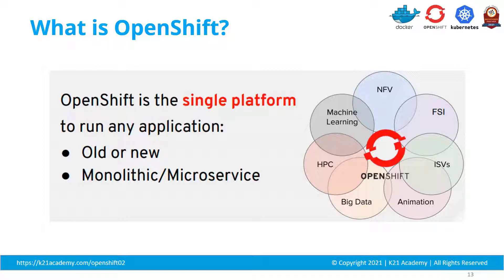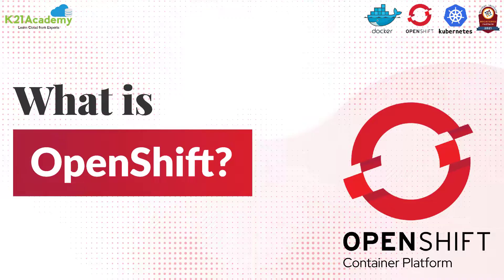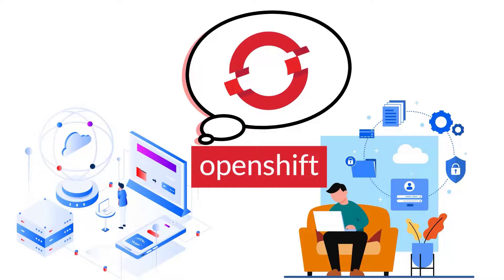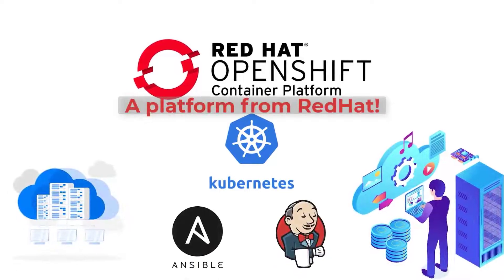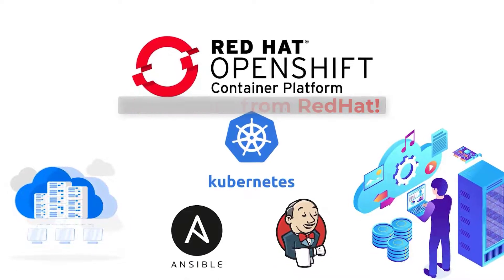Whatever is the background — whether it's animation, big data, machine learning, whatever the industry — you can run your containerized workload on OpenShift. OpenShift is a platform from Red Hat, powered by Kubernetes under the hood, with easy integration with DevOps tools like Ansible and Jenkins.